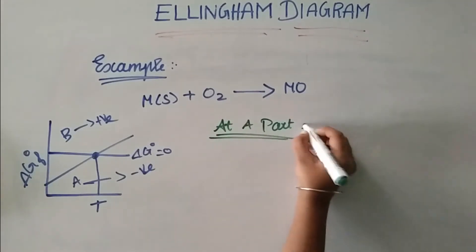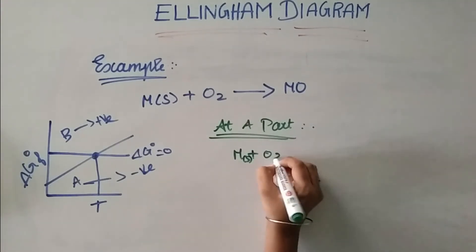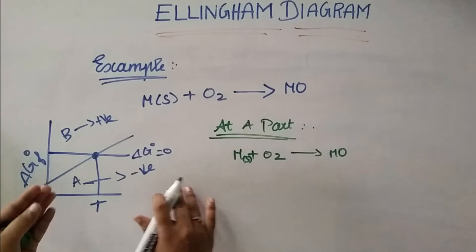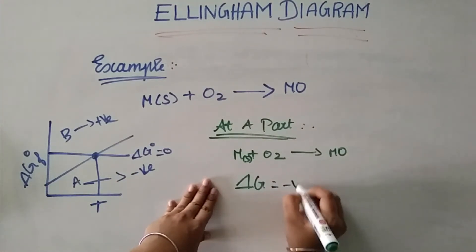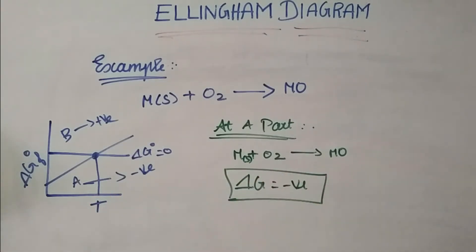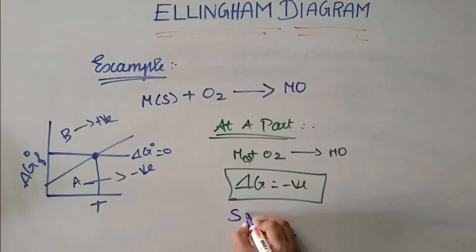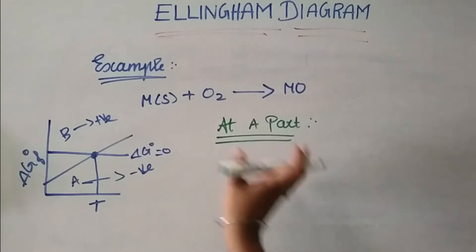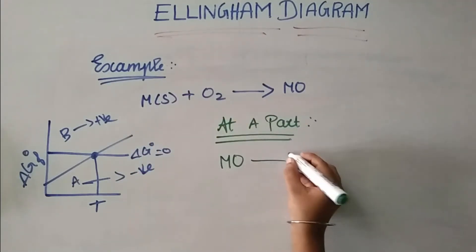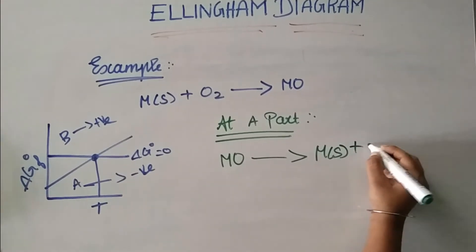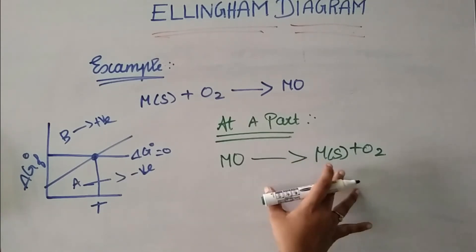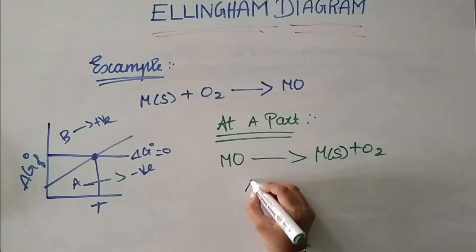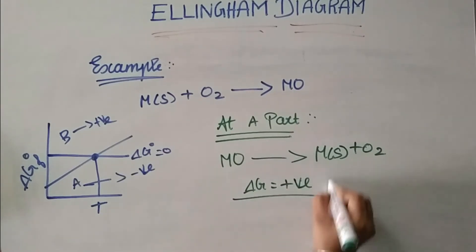In part A, the reaction is: metal + oxygen → metal oxide. Part A is below the line, so δG⁰ is negative. Negative δG⁰ means the reaction is spontaneous. Now if we reverse the reaction — metal oxide → metal + oxygen — the reverse reaction has a positive δG⁰, which means it is non-spontaneous.